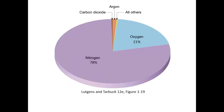If you were to take a look at a recipe for atmospheric air, this is what you'd get: 78% nitrogen, 21% oxygen, 0.9% argon, and then everything else is less than 0.1%. The only thing that can become a little more abundant is water vapor on very humid days.